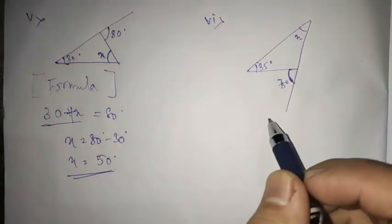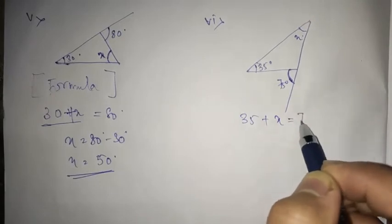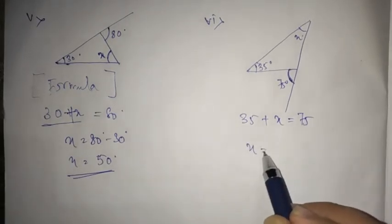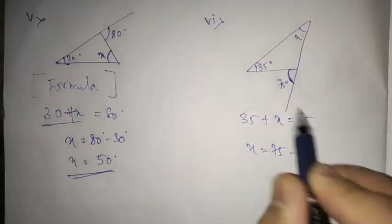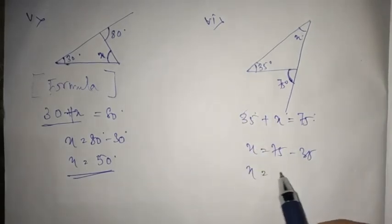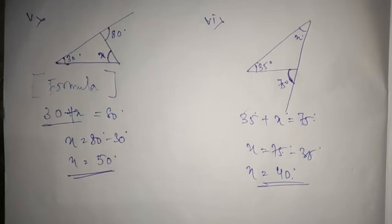Similarly, we have the next one: 35 plus x is equal to 75. So when you try to calculate the value, x is equal to 75 minus 35, because this 35 will come here and become minus 35. So x is equal to 40 degrees. With this, we are done with question number two, Exercise 6.2.